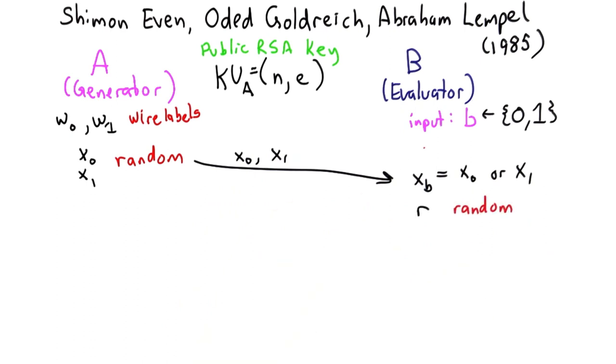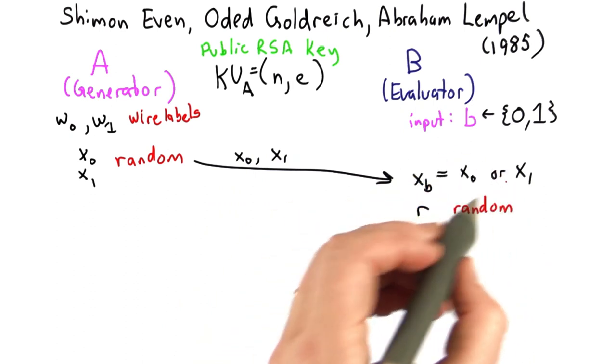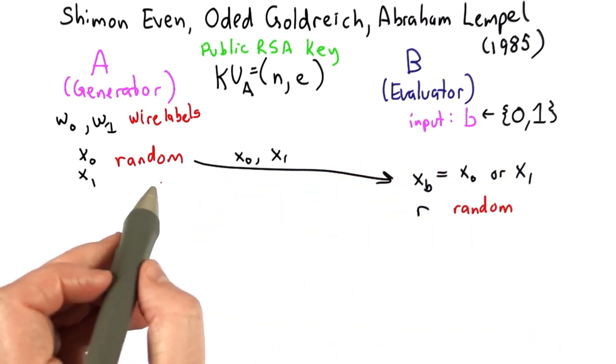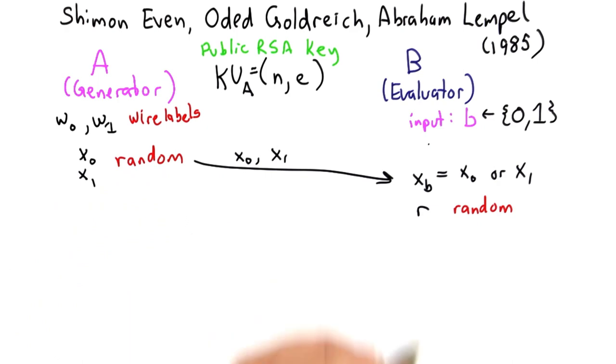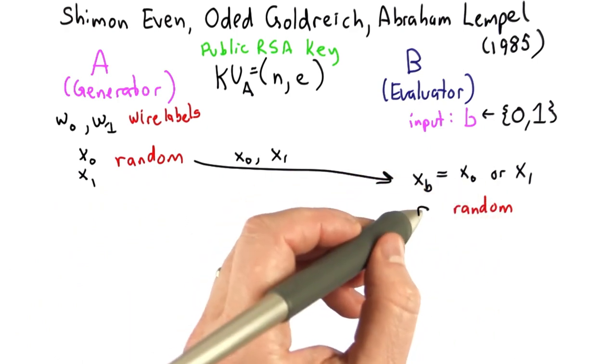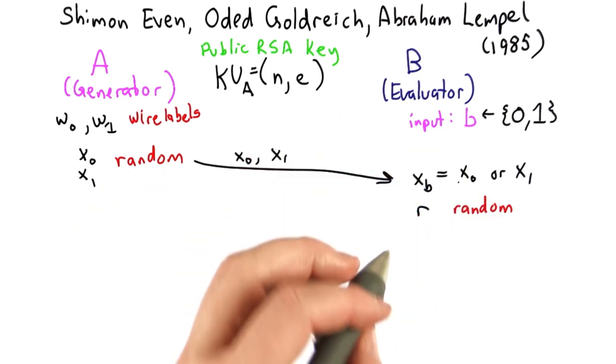Then Bob will pick some random value r. Bob's going to use this to blind the response. He can't allow Alice to learn whether he picked x0 or x1. That would reveal his input. So what he's going to do instead is use this random value to blind the response.